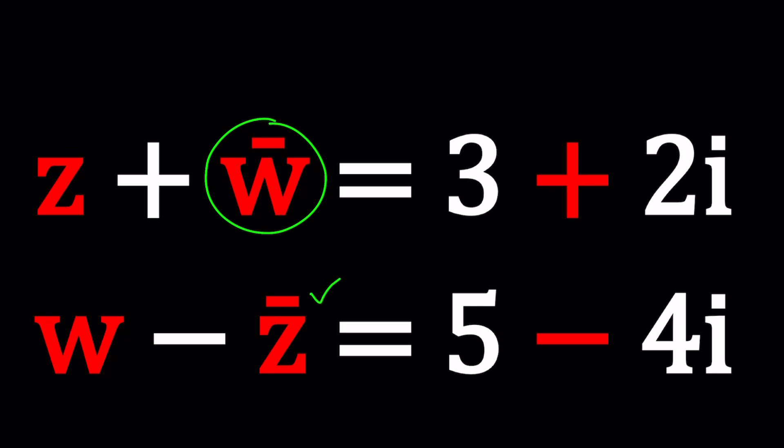I was able to find Z bar which is kind of nice but this is what it means. W bar is the complex conjugate of W. W is a complex number and Z bar is the complex conjugate of Z. Make sense? So we have this conjugated complex system which we're going to solve.